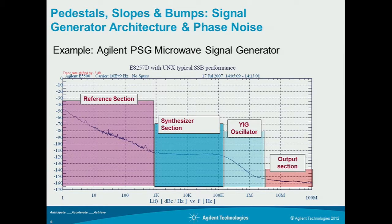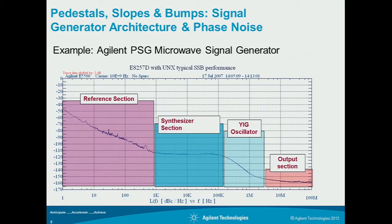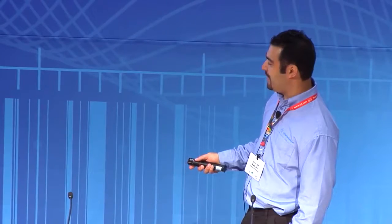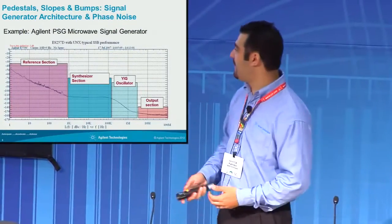This flat portion is usually what we call the pedestal region, and that is primarily determined by your synthesizer — all your phase lock loops determine that noise floor. That's typically between one kilohertz and a hundred kilohertz offset. Then this last portion, between 100k and a meg, is typically determined by your oscillator used in the system — whether it's a YIG or a VCO — and the roll-off here will be determined by that choice.